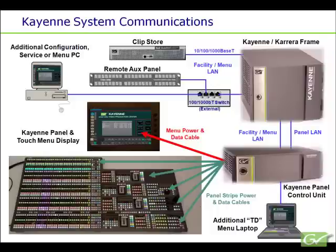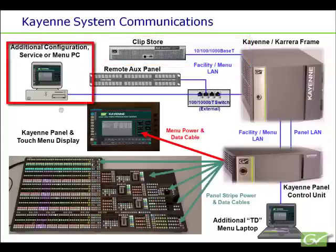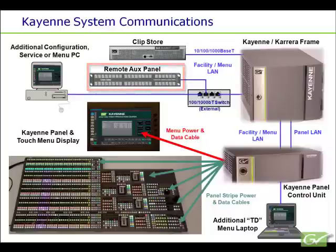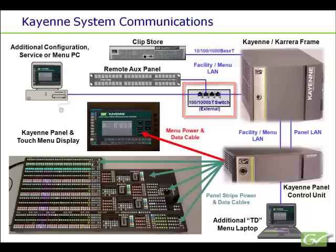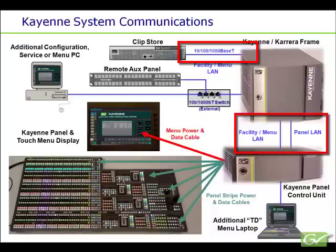A separate dedicated panel LAN cable is connected from the PCU to the frame for panel communications from the stripes. This keeps the facility LAN data traffic and panel data traffic isolated. There are a total of four Ethernet connections on the rear of the frame that can be used for additional devices, including the two dedicated Ethernet LAN connections to the PCU. Additional gigabit Ethernet switches can be added to the system as required. The clip store and the two panel LAN connections must be direct connections to the frame. If these need to be extended, contact Grass Valley customer support prior to installation.